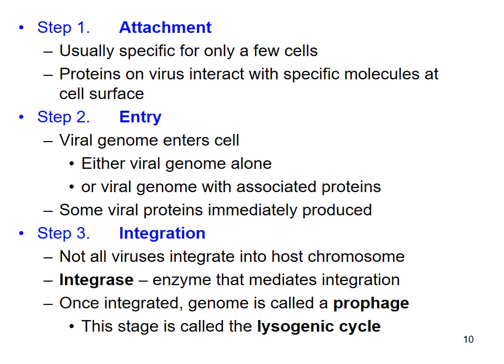Step one is attachment — the virus needs to line up with its proper host cell and make a physical connection to it. Certain proteins, such as the spikes and knobs seen on some viruses, increase the interaction with the host cell membrane. Once the attachment step is made, step two is entry — the viral genome is inserted into the cytoplasm of the host cell. The virus can either release just its genome (DNA and RNA), or it can also release some associated proteins needed for its replication cycle.